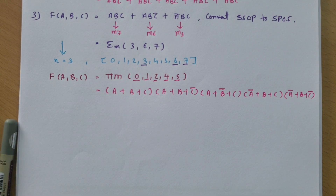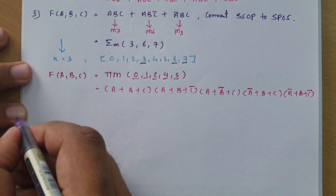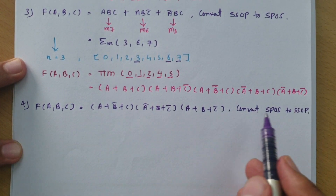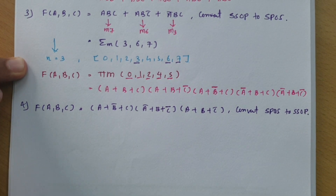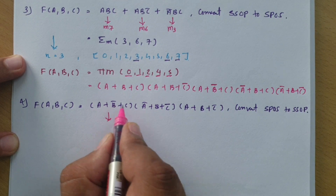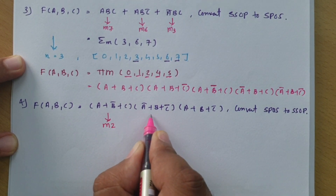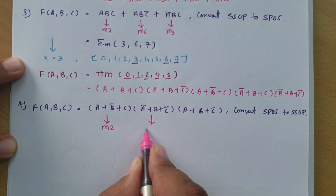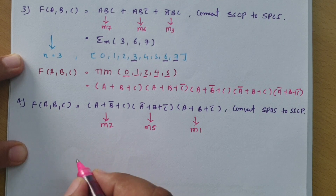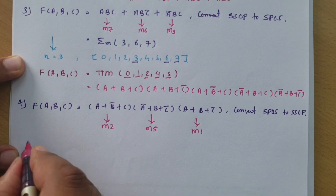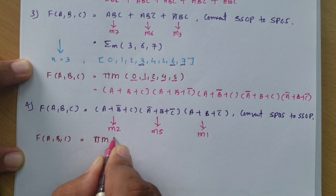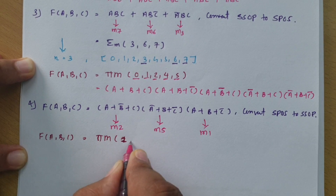One more example. We have a function given in SPOS form and need to translate it into SSOP. First I identify the terms: the first term corresponds to bits 0,1,0 — that is M2. The second term is 1,0,1 — that is M5. There is also M1. So I can rewrite this function as pi M (1, 2, 5).